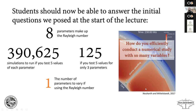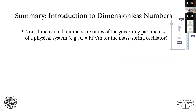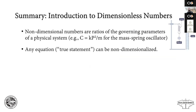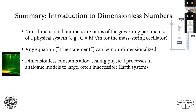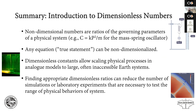Hopefully that gives you some ideas on how you might introduce upper-level undergrads or beginning graduate students to modeling and the uses of dimensionless numbers. When they walk away, they should understand that non-dimensional numbers are ratios of the governing parameters of a physical system — like kT² over m that they calculated for the mass-spring oscillator — that non-dimensionalizing an equation doesn't change whether it's a true statement, that dimensionless constants allow scaling of physical processes in analog models to large often inaccessible Earth systems, and that finding appropriate dimensionless ratios can reduce the number of simulations or experiments necessary to test all of parameter space. Thank you very much for listening, and I'm happy to take any questions.